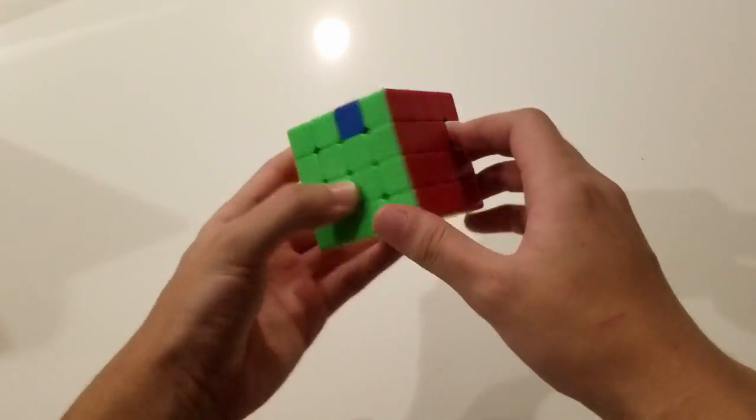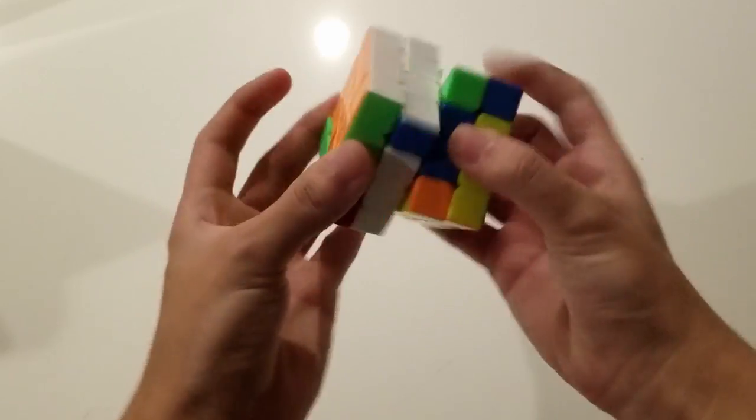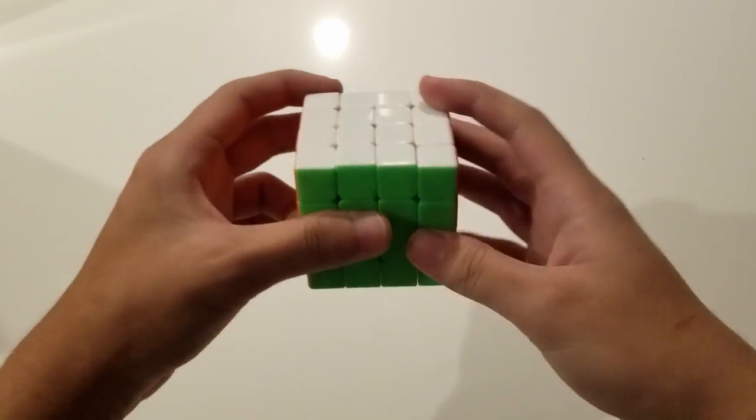So the first one is to just directly move them into place. So here we have UFR FDR and just do our algorithm and then undo our setup.